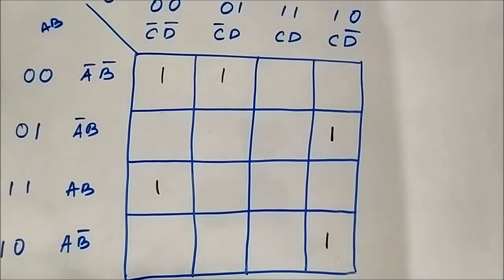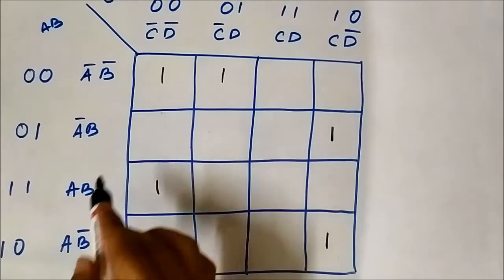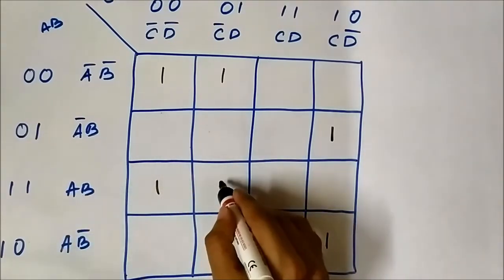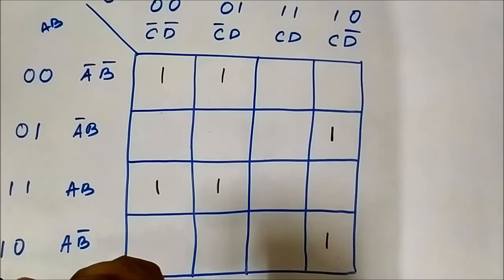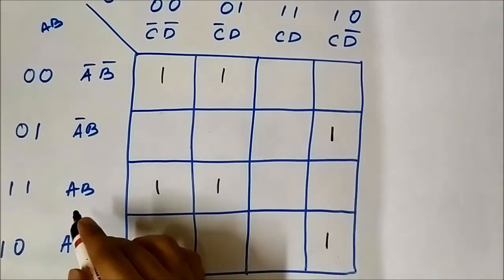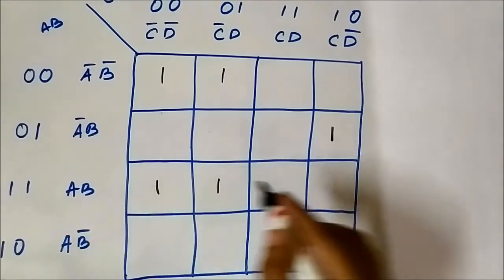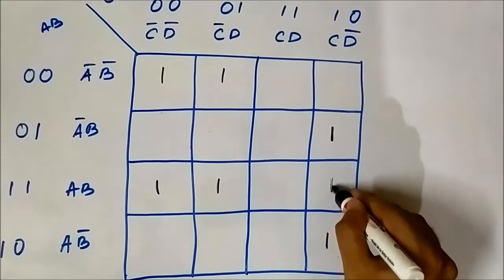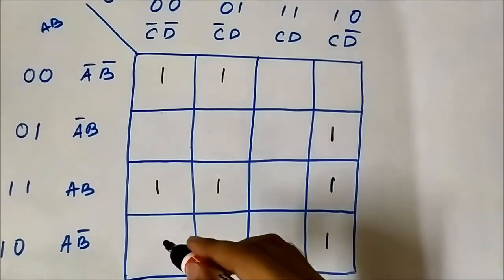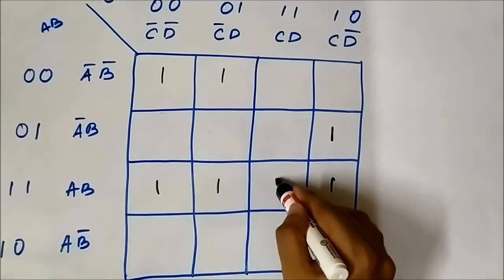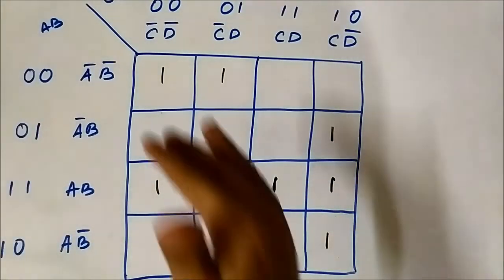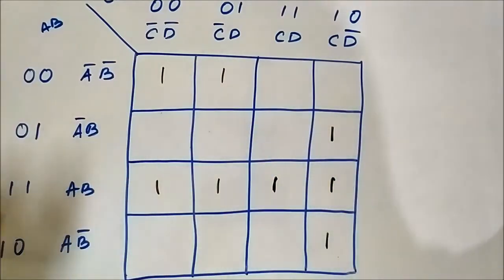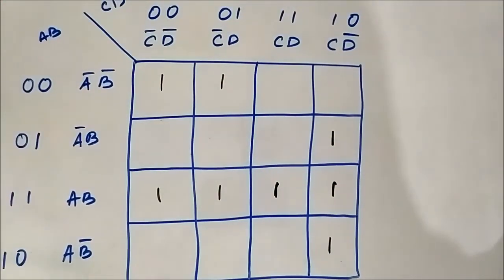For ABCD̅: A, B horizontal, CD̅ vertical — marked as 1. For ABCD: A, B horizontal, CD vertical — marked as 1. So we have mapped all the Boolean terms present in the Boolean expression into the four-variable SOP KMAP. This is how we do it for four-variable expressions.